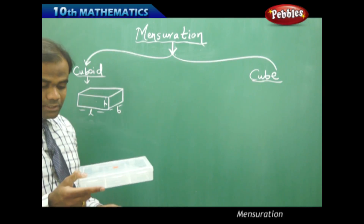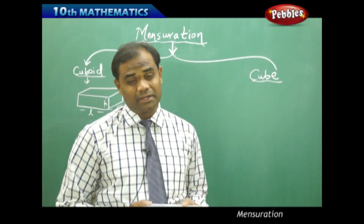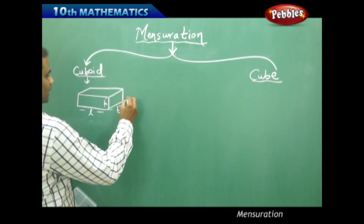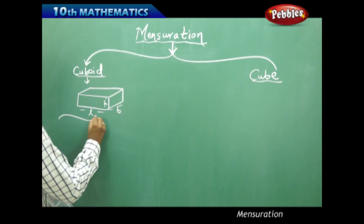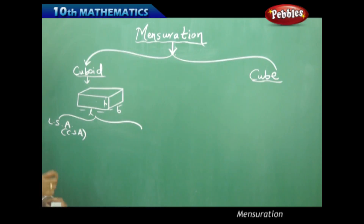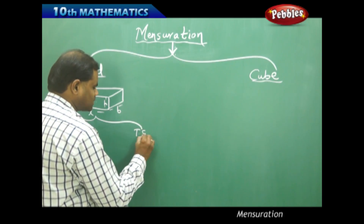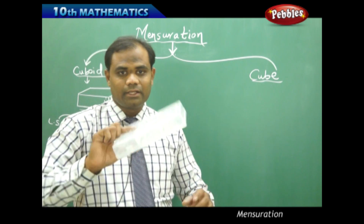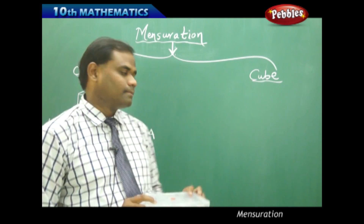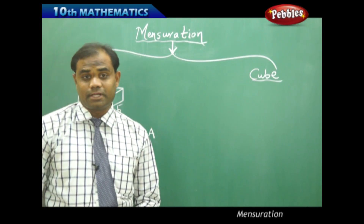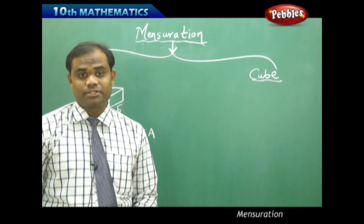Now in case of this cuboid, I identify two types of areas which I am going to discuss here. One is the lateral surface area, also called the curved surface area in case of curved objects, and the total surface area is the total area of the entire box. What is the lateral surface area and how is it different from the total surface area is the biggest question here.